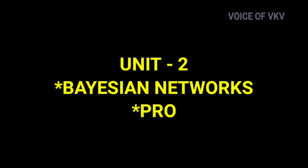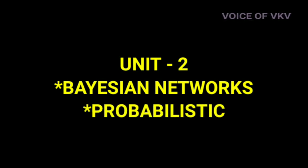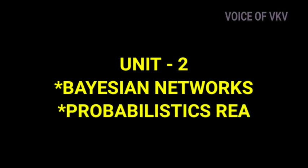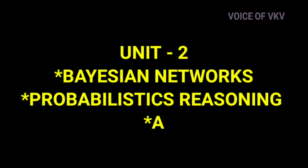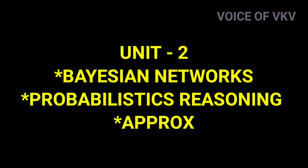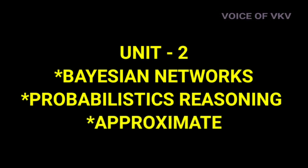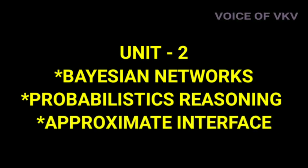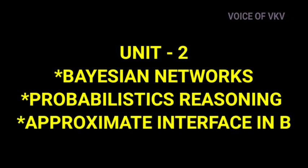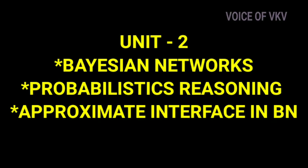Next is Unit 2. There are 3 important topics in Unit 2. The 1st is Bayesian Networks. The 2nd is Probabilistic Reasoning. The 3rd is Approximate Inference in Bayesian Networks. You can see all 3 topics in detail in the playlist.